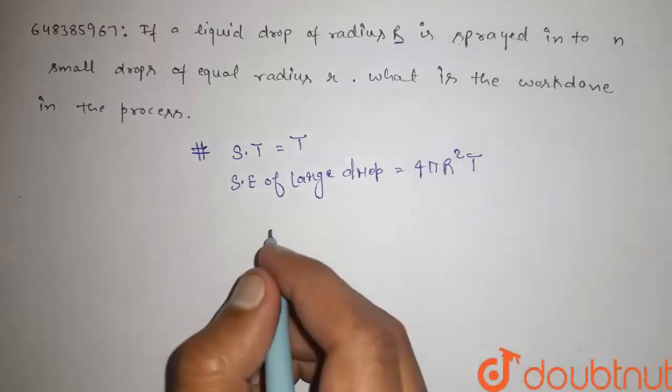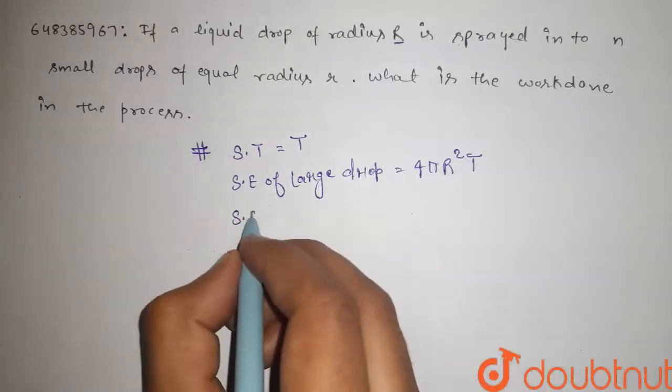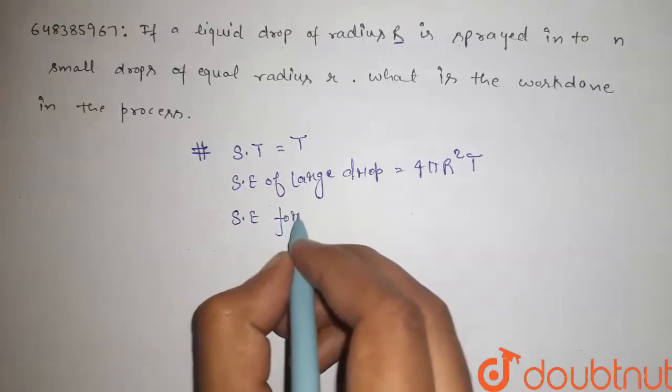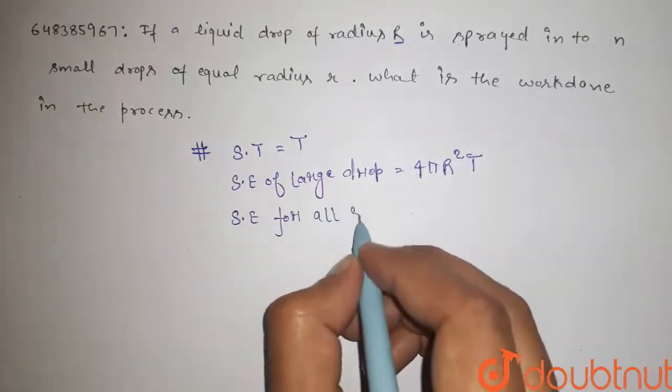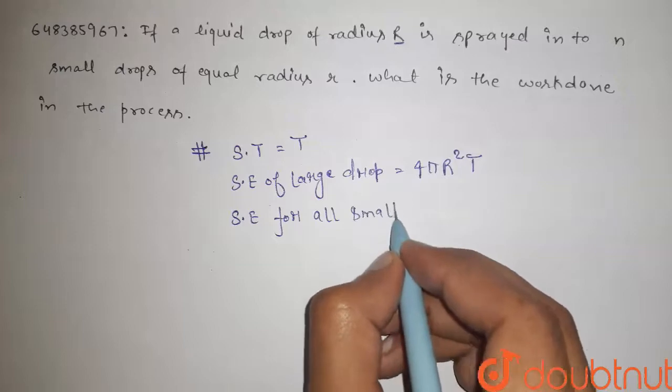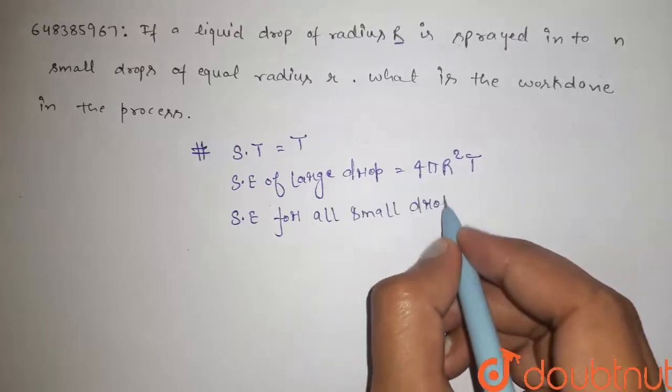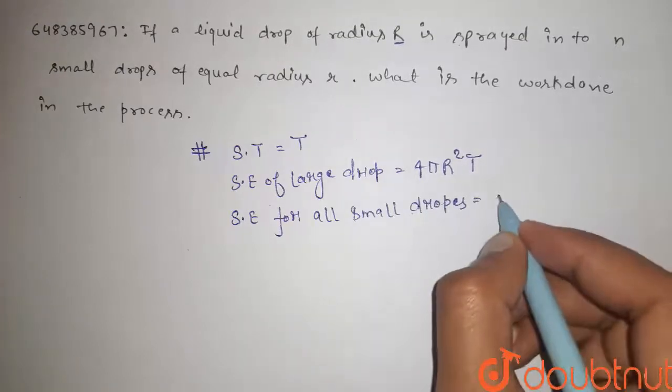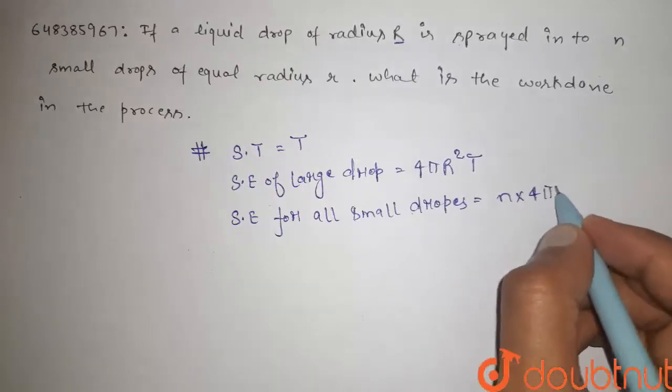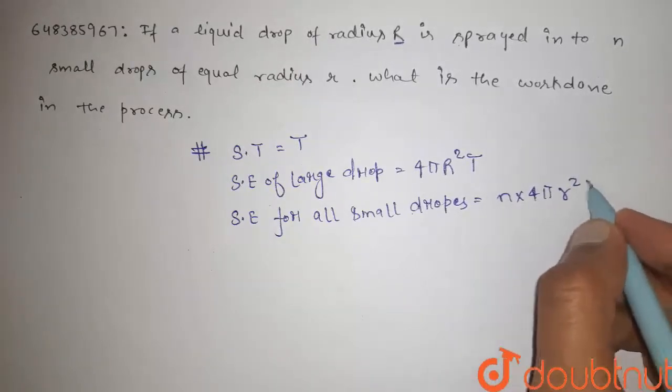Surface energy for all small drops is n times surface area 4πr² times T.